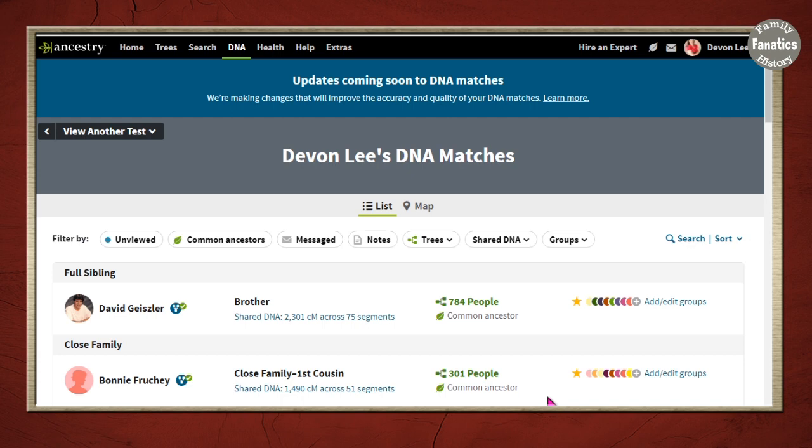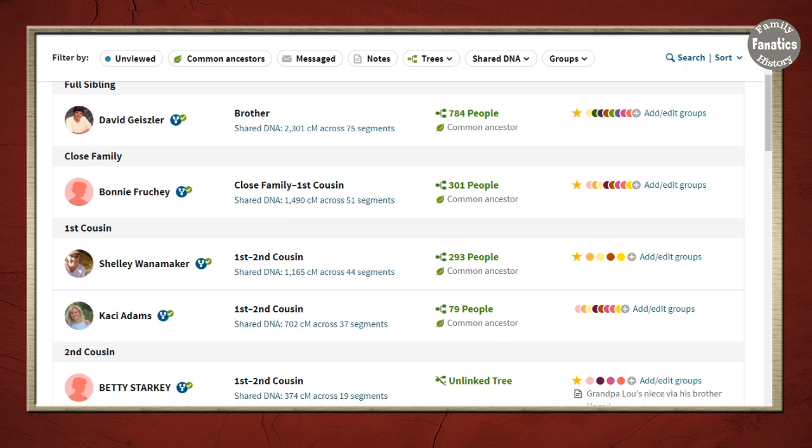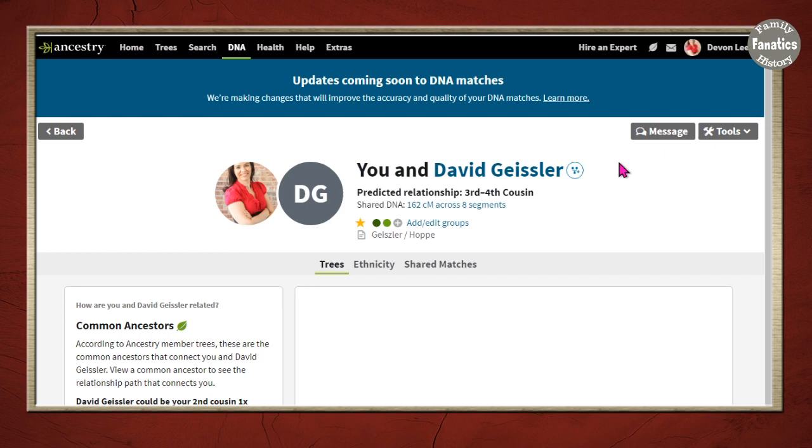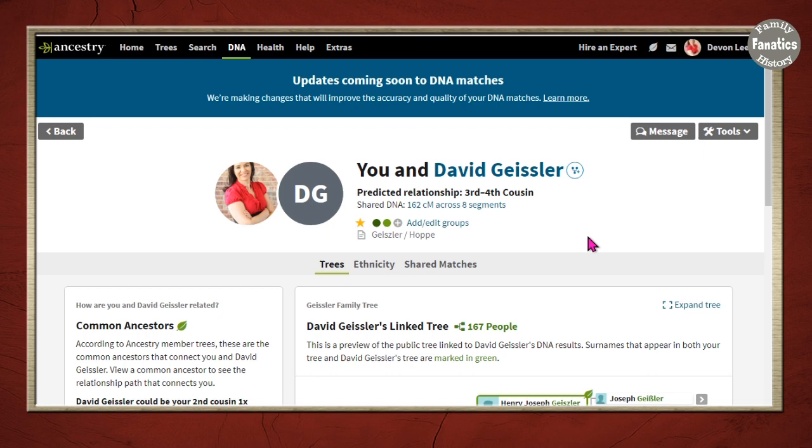So here we have my DNA match list. And I have started to tag a number of my relatives. As I'm scrolling down, I find one of my relatives who is not in my tree. So we're going to go to David Geisler. If I click on his name,